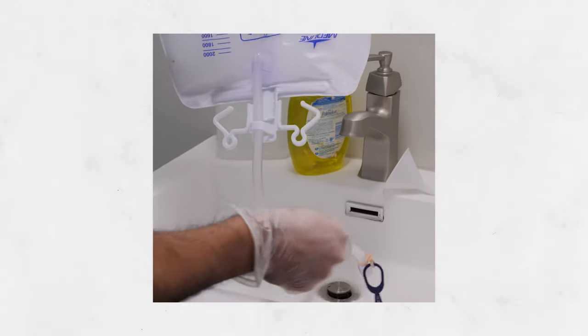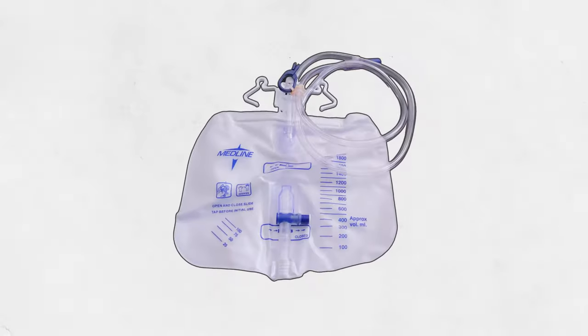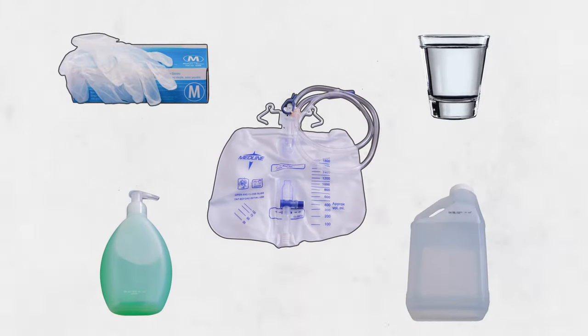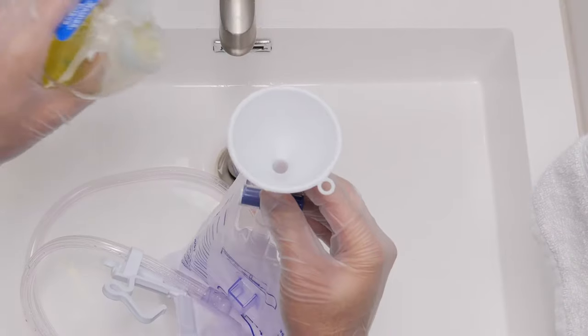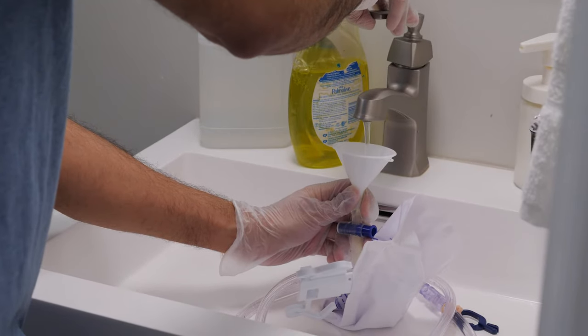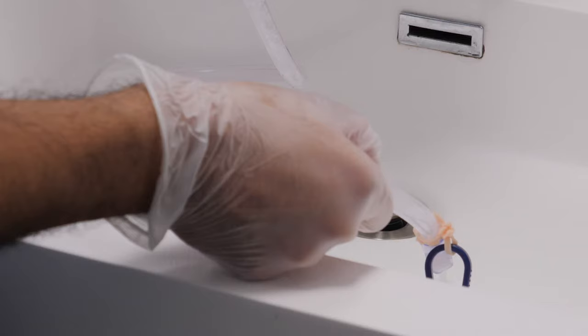Cleaning the bag. To clean a catheter bag, you'll need gloves, soap, water, and white vinegar. A funnel will also be really helpful. Using a funnel, fill the bag with warm, soapy water. Swish it around, then let it drain.